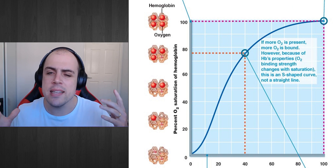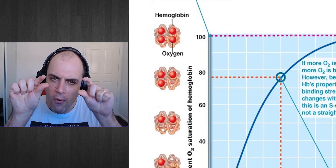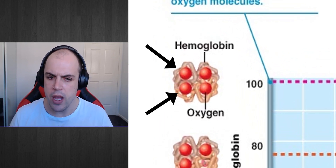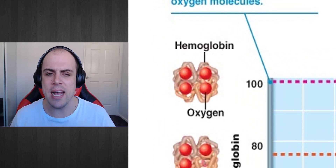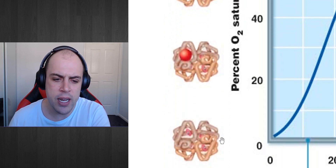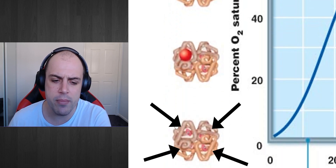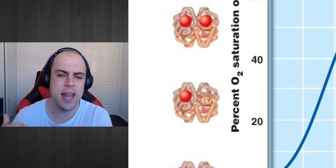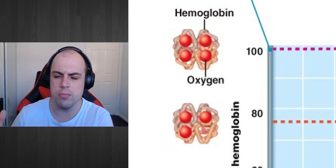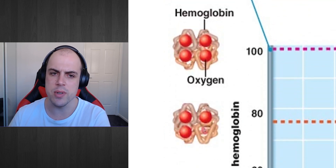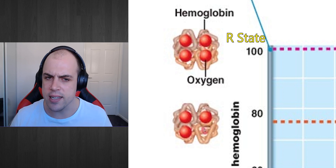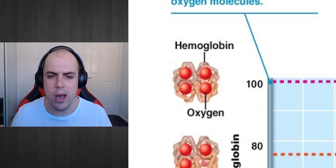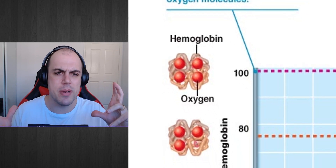Hemoglobin as a protein has four binding sites for oxygen. If hemoglobin has no oxygens bound to it, it is very much in its T-state, whereas if it has all four oxygen molecules bound to it, it's very much in its R-state. So how does that work — how is it that hemoglobin has two different states to begin with?